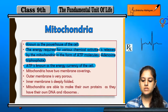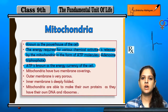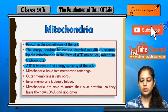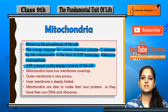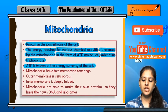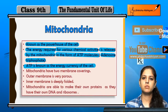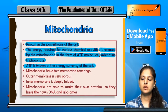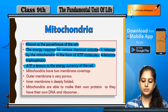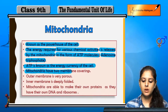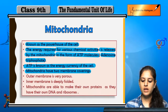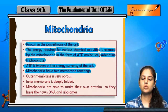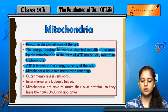ATP ko cell ki energy currency bhi kaha jata hai. Jo energy hai cell ki, usko ATP ki form mein use karta hai, aur usko hum aage further calculate karte hain. Mitochondria have two membrane coverings — cell ki do membrane covering hoti hai.